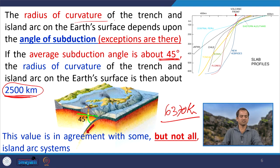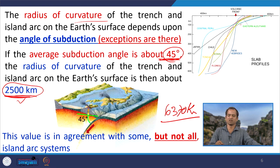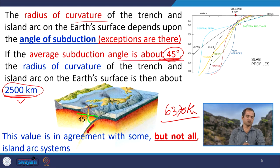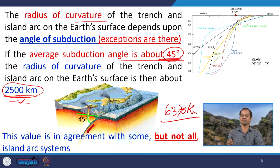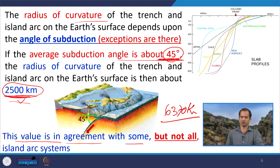If the angle of subduction varies, the radius of curvature will vary accordingly. Globally, the angle of subduction ranges from about 10 degrees to 90 degrees, implying a wide range of curvature radii. However, while this formula works for the average angle of subduction, in many cases it does not match observations, because other factors also influence the radius of curvature and the angle of subduction. The formula agrees with some island arc systems but not all.